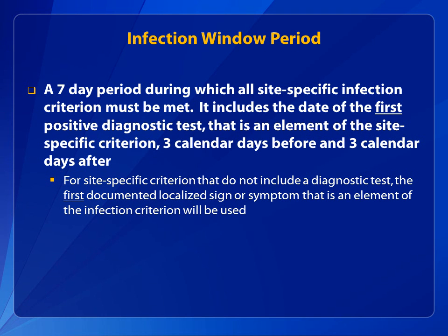An infection window period is used when determining a site-specific definition. This is a seven-day period during which all site-specific infection criteria must be met. It includes the date of the first positive diagnostic test, which is an element of the site-specific infection criterion, three calendar days before the diagnostic test, and three calendar days after. For site-specific infection definitions that don't include a diagnostic test, use the date of the first documented localized sign or symptom that is an element of the infection criterion.